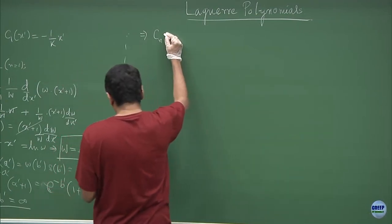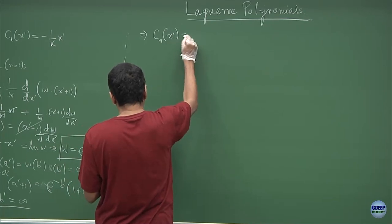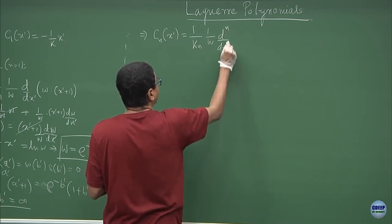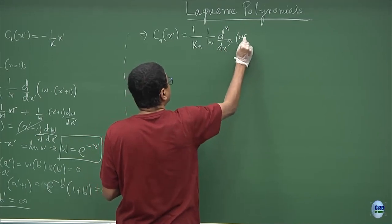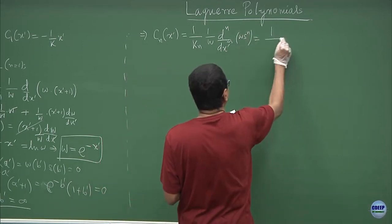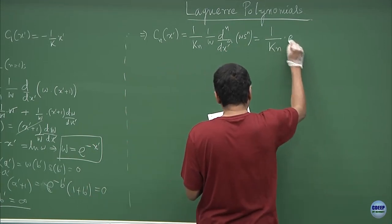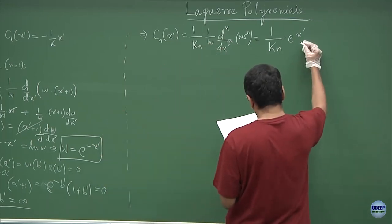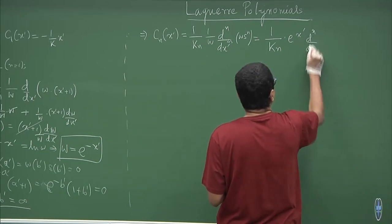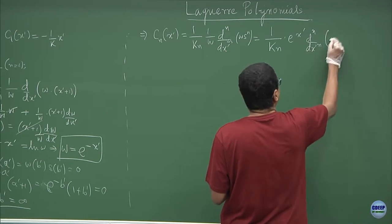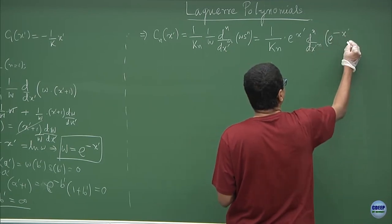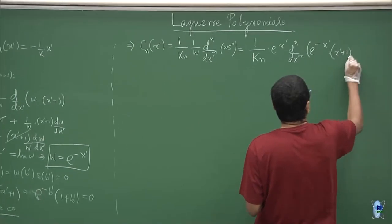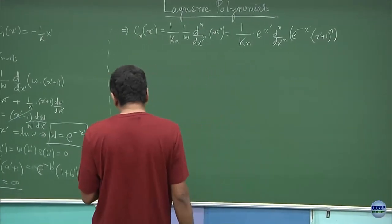For general n, the polynomial C_n(x') is given by 1/k_n times 1/w times d^n/dx'^n of [w times s^n], which can be written explicitly as (1/k_n) e^(x') times d^n/dx'^n of [e^(−x') times (x'+1)^n]. This is the formula for the polynomial we have derived.